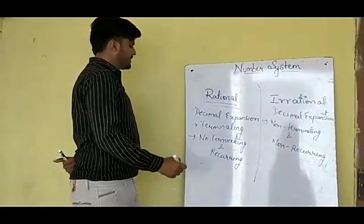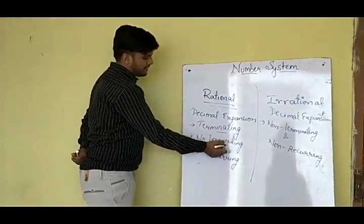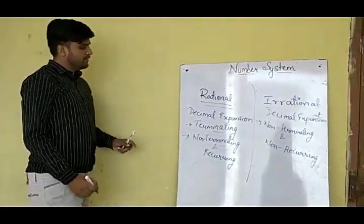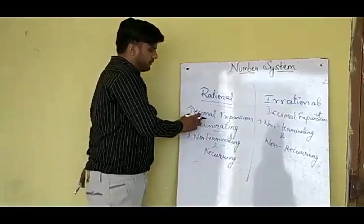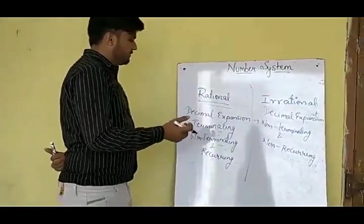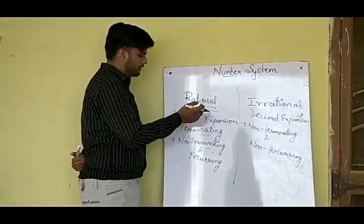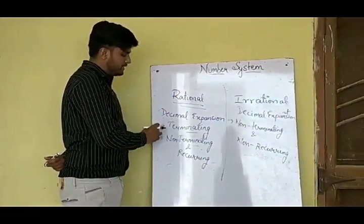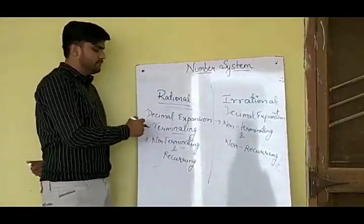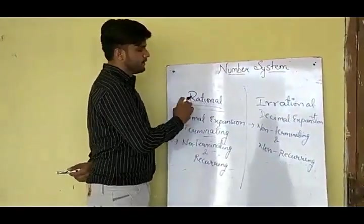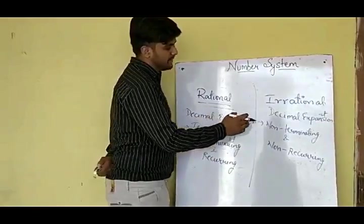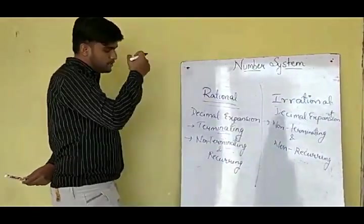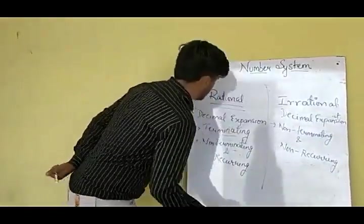Now, what is the meaning of terminating, non-terminating, or recurring decimals? Whenever we expand a rational number — if we divide it in decimal form — if the number is terminating, it will be a rational number. If it is non-terminating and recurring, it will also be a rational number. But if the decimal expansion is non-terminating and non-recurring, it will be an irrational number.